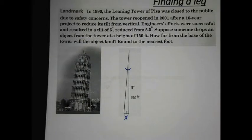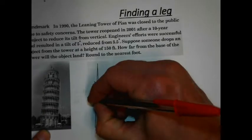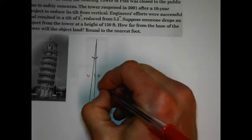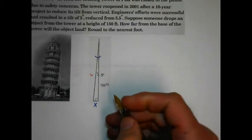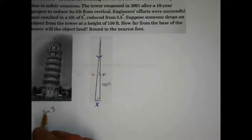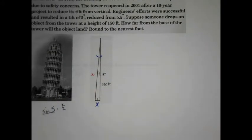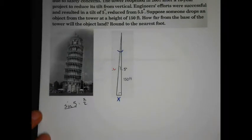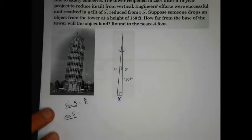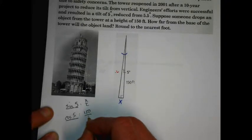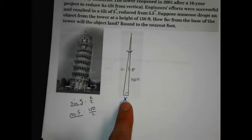We're given the height and looking for the short leg. Let's name the hypotenuse C. We have three choices for trig ratio. The sine of 5 is opposite over hypotenuse, which would be x over C — that's not helpful here. The cosine of 5 is adjacent over hypotenuse, which would be 150 over C — that's going to be kind of helpful, but it doesn't help us find this distance directly. We need to figure out this horizontal distance.